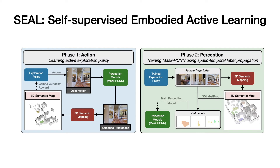Our framework is called self-supervised embodied active learning, or SEAL, and consists of two phases: action and perception. During the action phase, we learn an active exploration policy, and during the perception phase, we train a perception model on the data gathered using the exploration policy. Both action and perception are learned in a completely self-supervised manner without requiring any ground truth semantic annotations or map information. A critical component for both phases is a 3D semantic mapping module which builds a 3D semantic map from a sequence of agent observations.